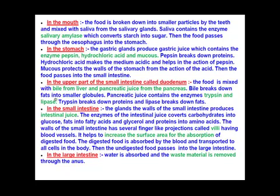Bile juice helps in breaking down the fat component of the food into smaller molecules, so the digestion of fats begins in the small intestine by the action of bile secreted from the liver. Pancreatic juice contains the enzymes trypsin and lipase — trypsin further breaks down proteins, while lipase further breaks down fats into smaller components.